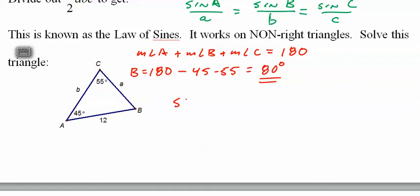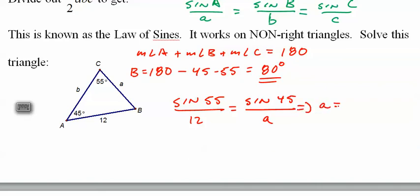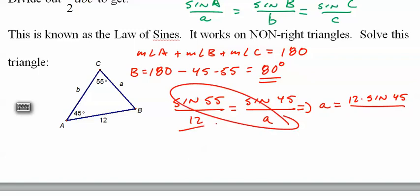Now we can set up a proportion: sine of 55° over the opposite side 12 equals sine of 45° over side a. Cross-multiply — what my students call the Jimmy Neutron — and solve for a.